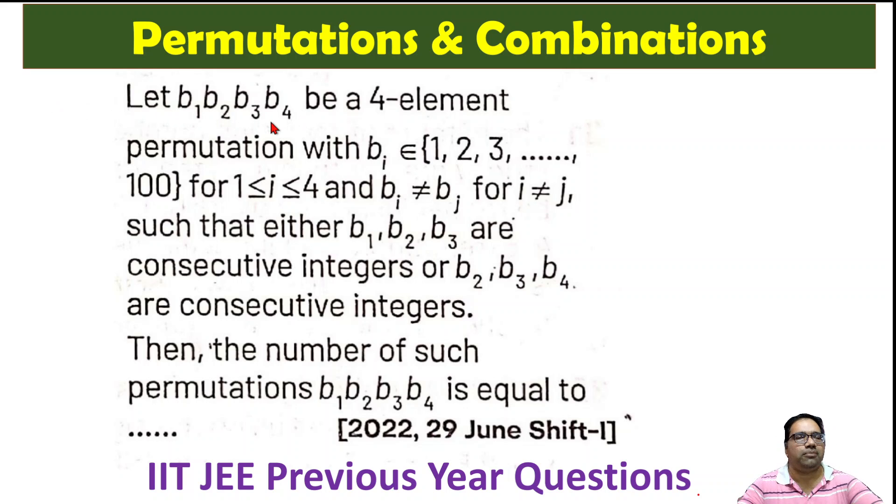For example, B1, B2, B3, B4 can be 20, 26, 27, 29 or any set of four numbers. But what is the condition? The condition is such that B1, B2, B3 are consecutive integers or B2, B3, B4 are consecutive integers.